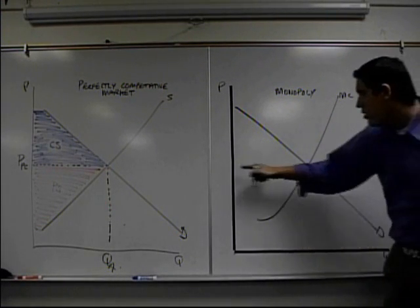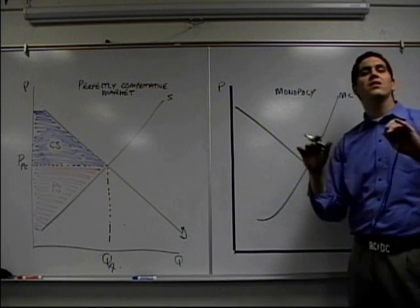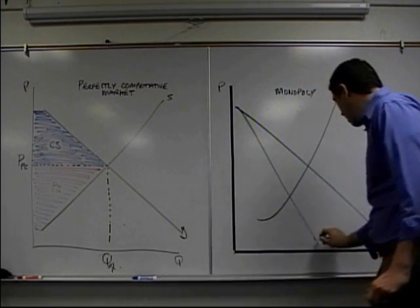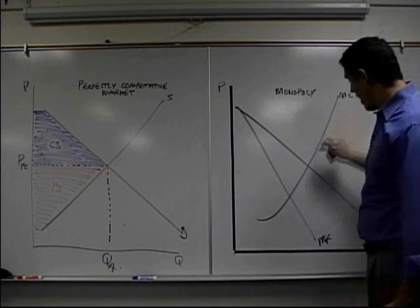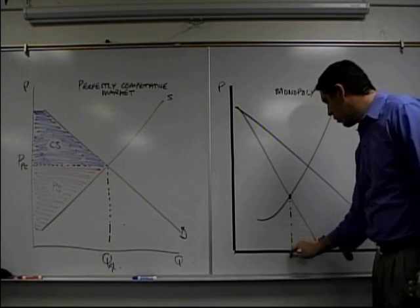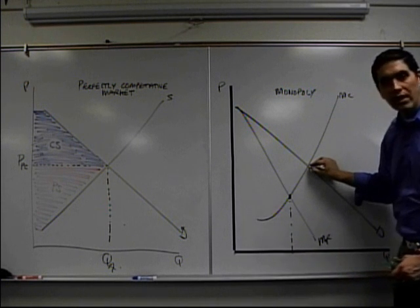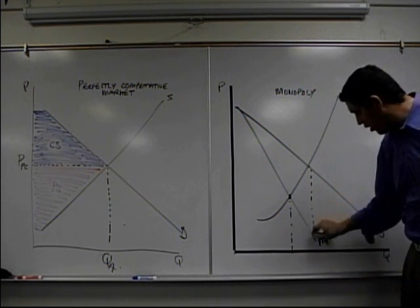You would think they would produce here just like perfect competition and they don't. And the reason why they don't is because of this marginal revenue curve. The marginal revenue is less than the demand and all firms produce where MR equals MC, they're going to produce this quantity. This is the quantity that they would produce if this was perfectly competitive.